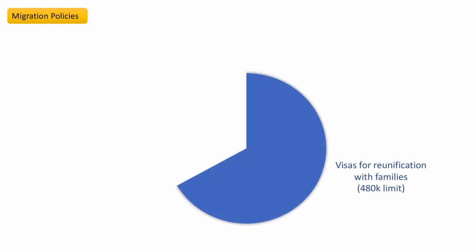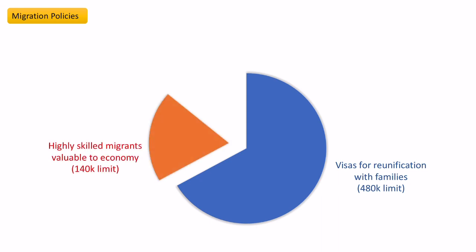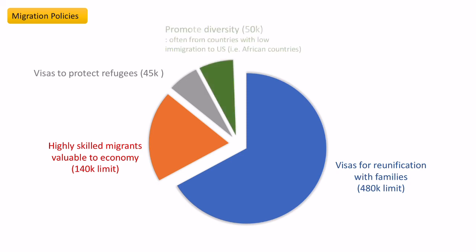The largest visa category is for reunification of families — 480,000 places. Highly skilled migrants, who are valuable to the economy, receive 140,000 visas. They also give visas to protect refugees and to promote diversity, providing visas to people from countries that don't normally migrate to the US, so many of these go to people from African countries where migration rates to the US are low.